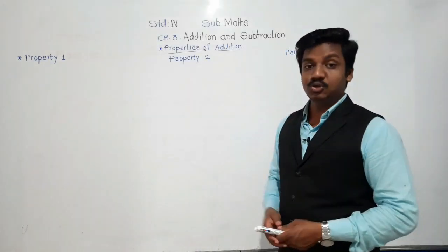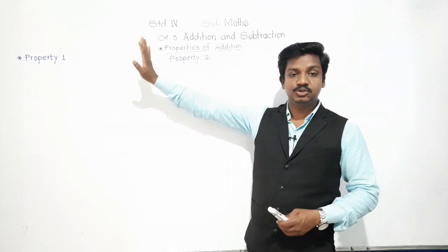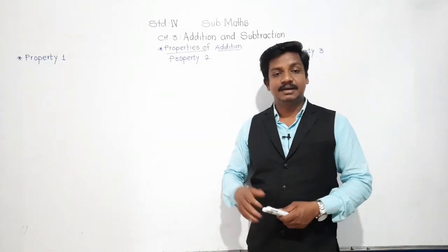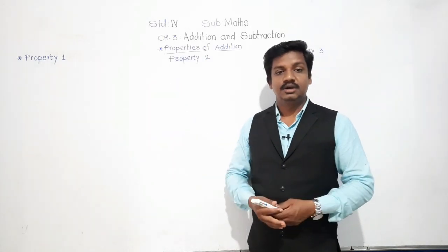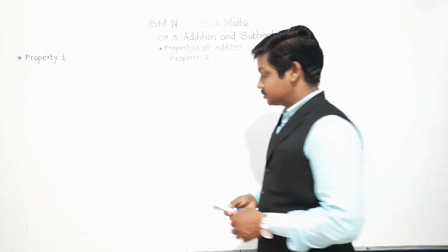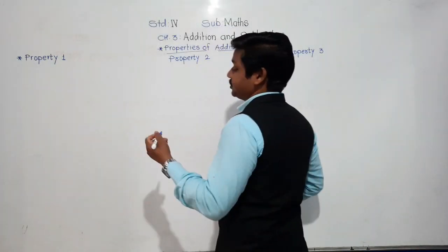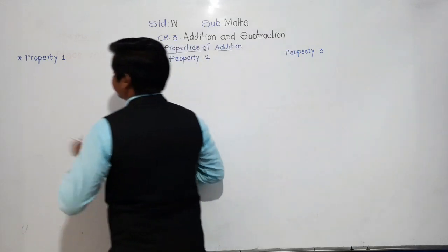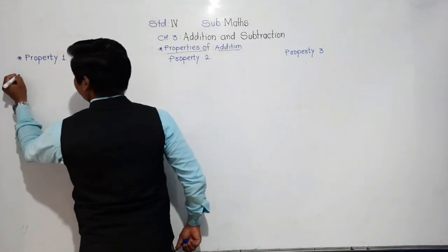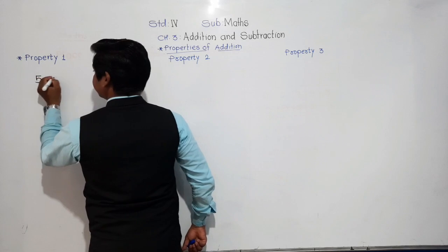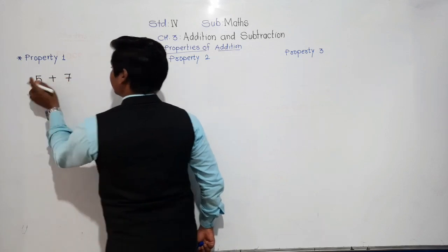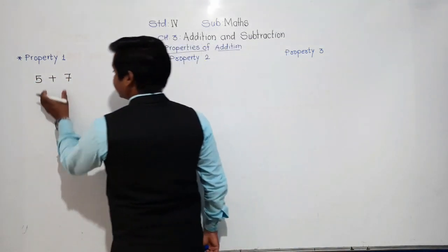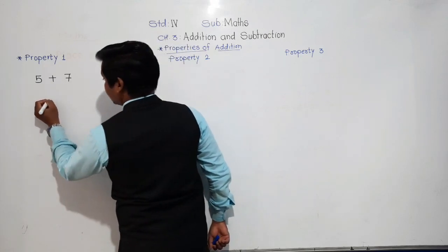What are those patterns? You already know them; we are just going to revise and also look at 5 and 6 digit numbers. The first property of addition: if there are two numbers, for example 5 and 7, and we add them — 5 plus 7 — we get 12.